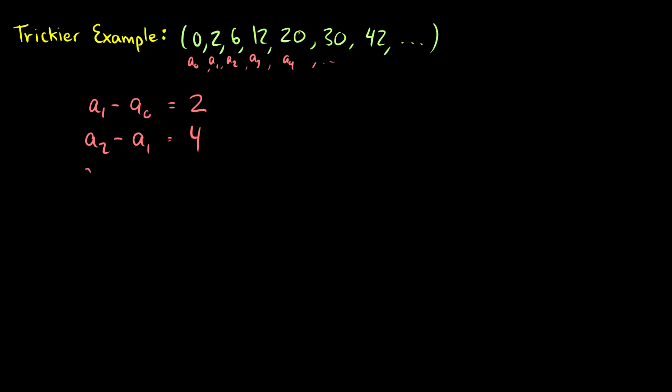a_3 minus a_2 is 12 minus 6, which is 6. So we can see this pattern here. So following this pattern, we can see that a_n minus a_(n-1) is going to be 2 times n.